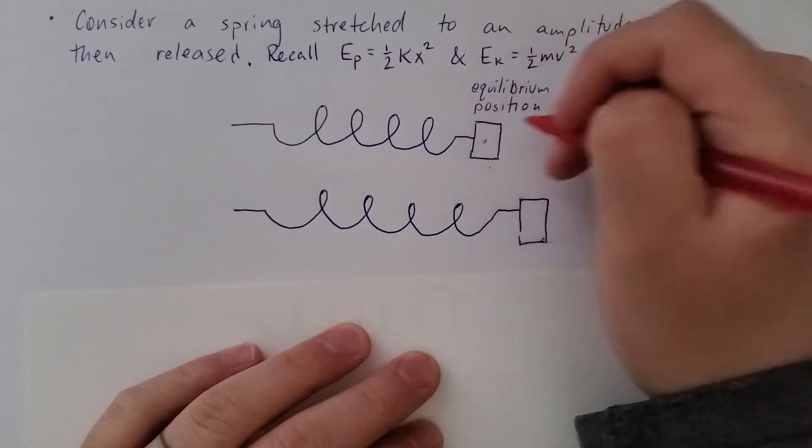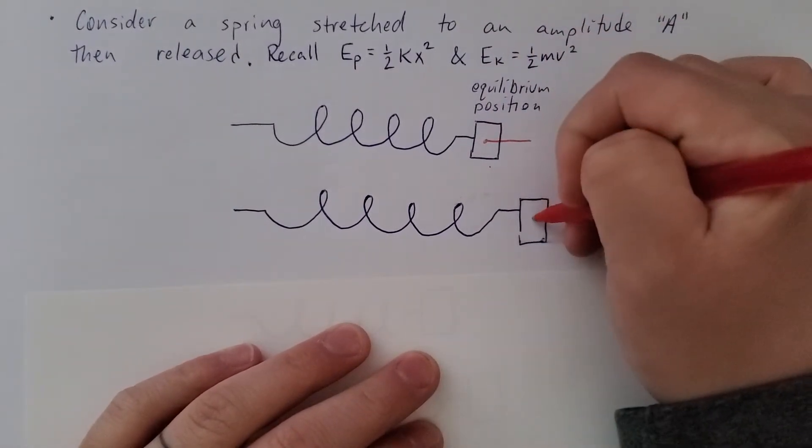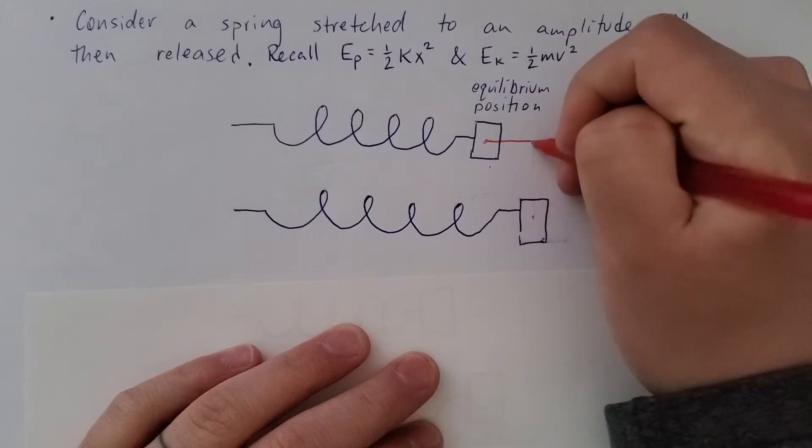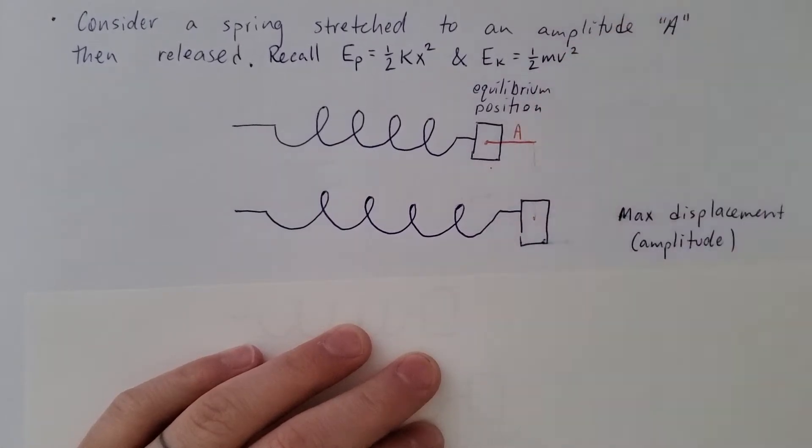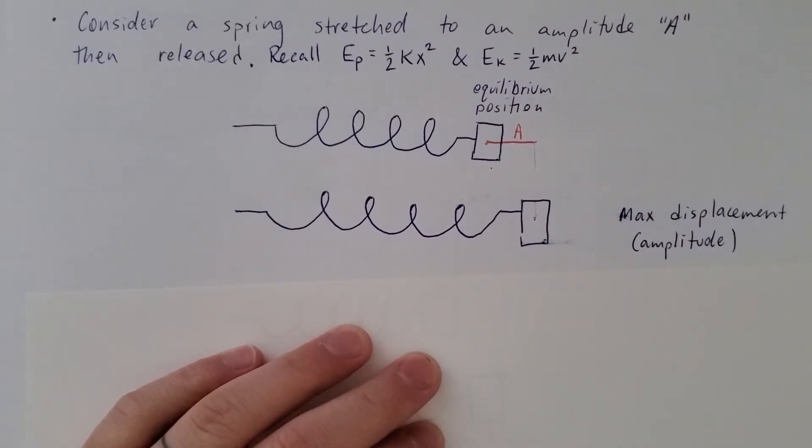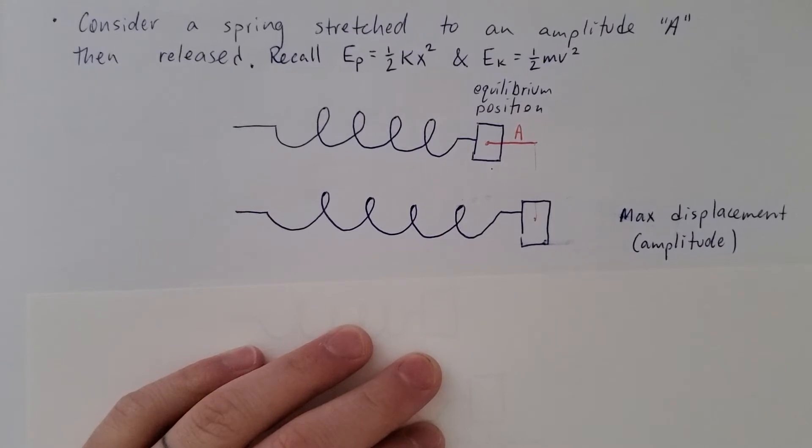So that would be the distance from the center of the mass here to the center of the mass here. That'll be my amplitude. I'll call it A, so the maximum displacement is amplitude.